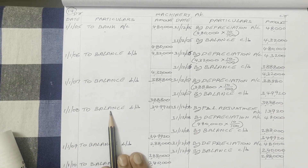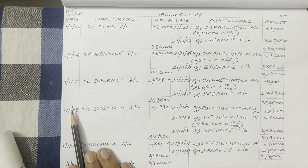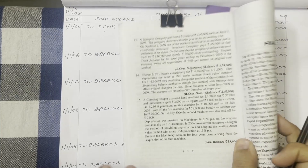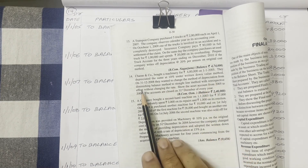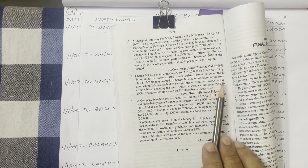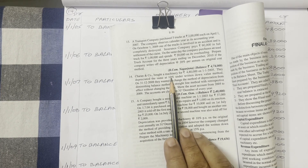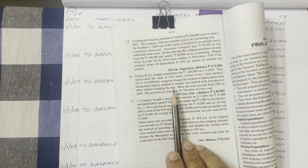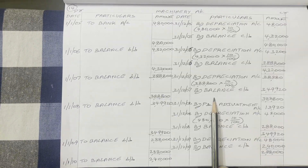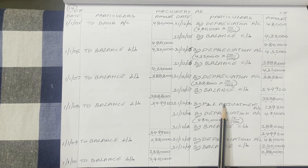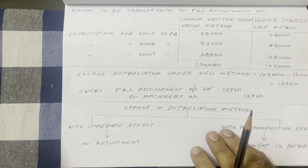Coming to the fourth year, date is 1st January 2008. Balance brought down: 3,49,920. In 2008, see the question again — on 31st December 2008, at the end of the fourth year, they wanted to change the method of depreciation from diminishing balance method to straight line method with retrospective effect, without changing the rate. Depreciation rate is the same — 10% under both methods. With retrospective effect, we have to adjust the depreciation difference. So till the opening balance entry, leave space and show that adjustment in the working notes.